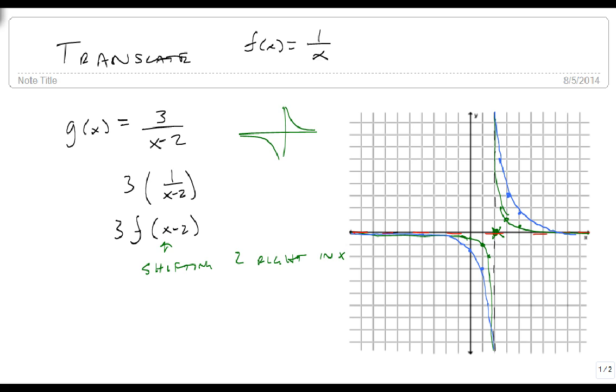And the blue is our answer. We've now translated this graph by multiplying it by 3 and shifting it to the right, 2.